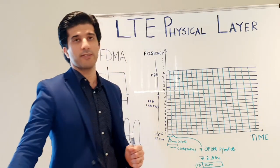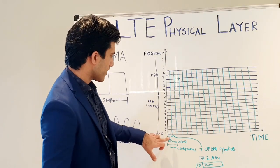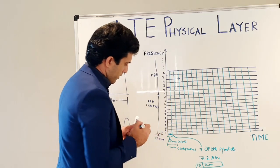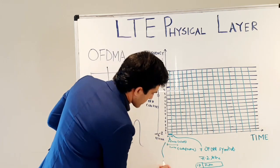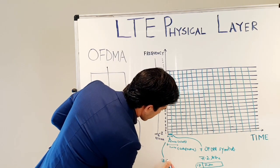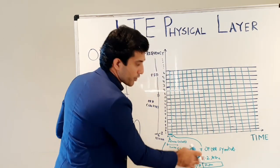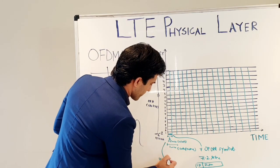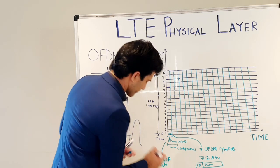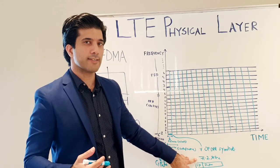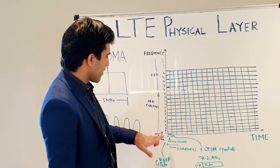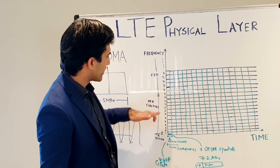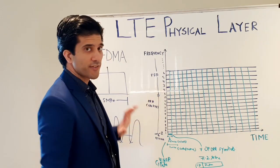In each time slot you have 7 OFDM symbols, and your data is mapped onto all of them. The total slot duration is 71.2 microseconds per OFDM symbol — approximately 4.6 microseconds for the cyclic prefix and then the data symbol. So in each symbol period, you will have one OFDM symbol on subcarrier 1, one on subcarrier 2, one on subcarrier 3, and so on up to subcarrier 12. The same pattern then repeats for your second resource block, third, fourth, and fifth.